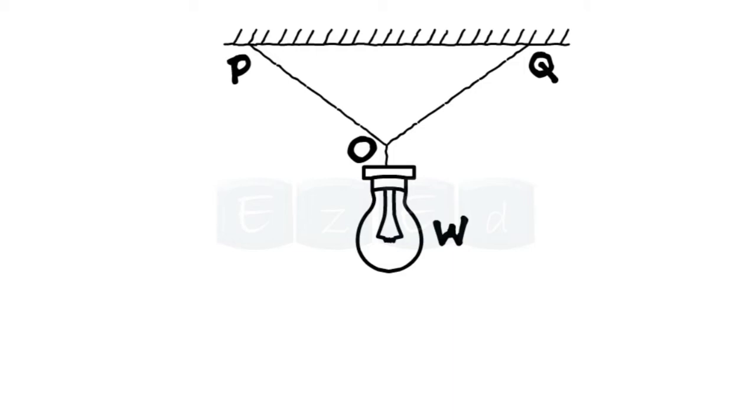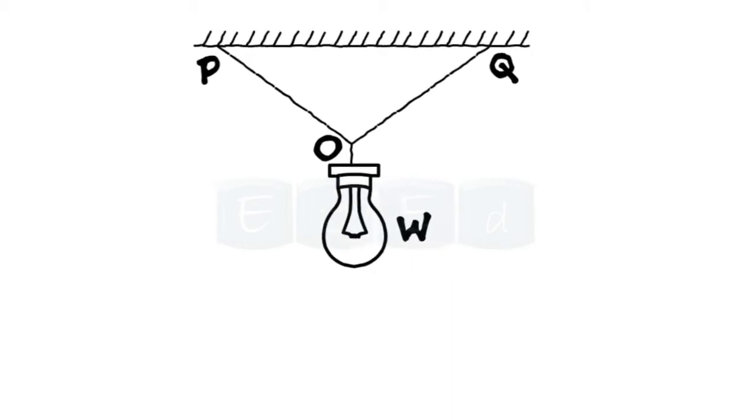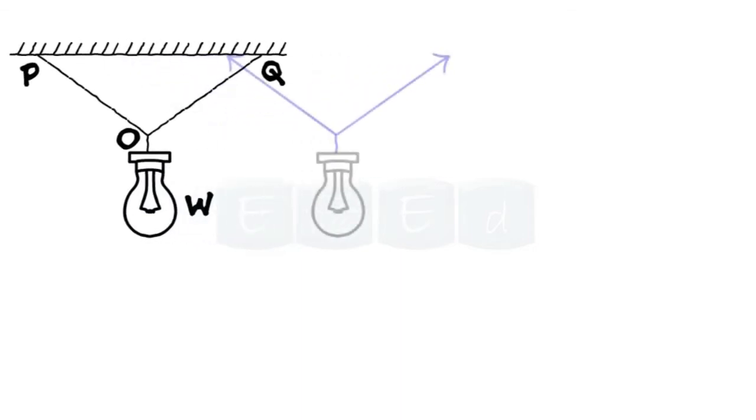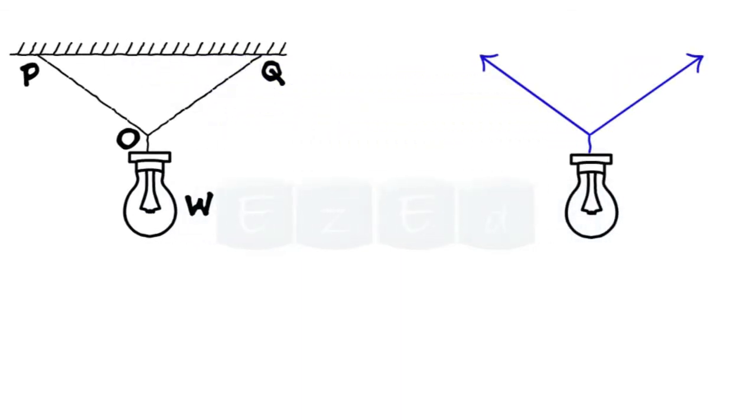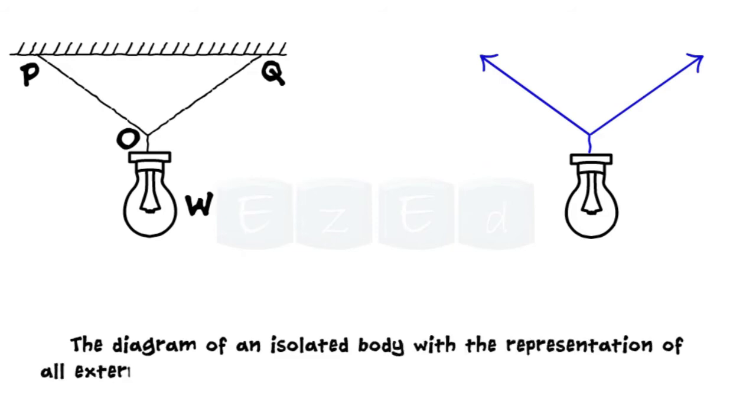If we want to analyze the force system that is acting on the lamp, we need to isolate it from the wall. Such a diagram of an isolated body with the representation of all external forces acting on it is called a free body diagram.